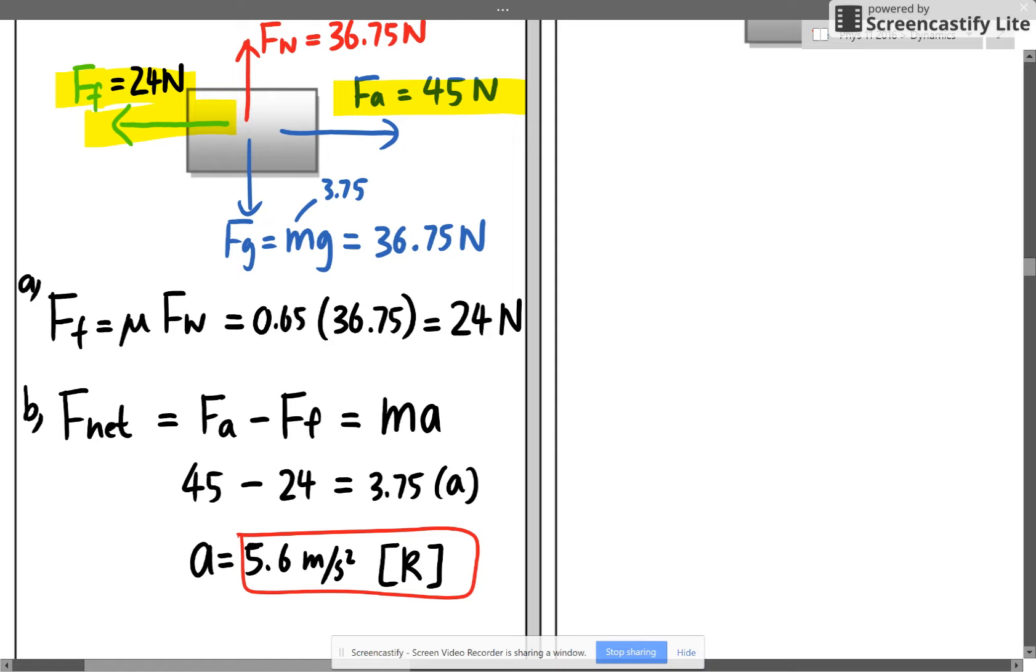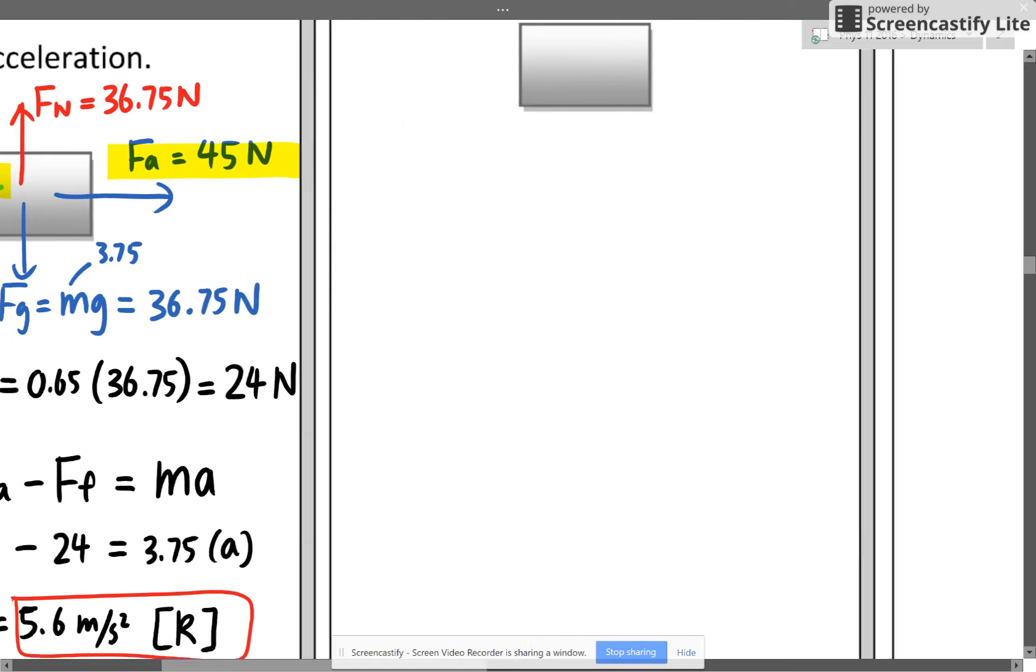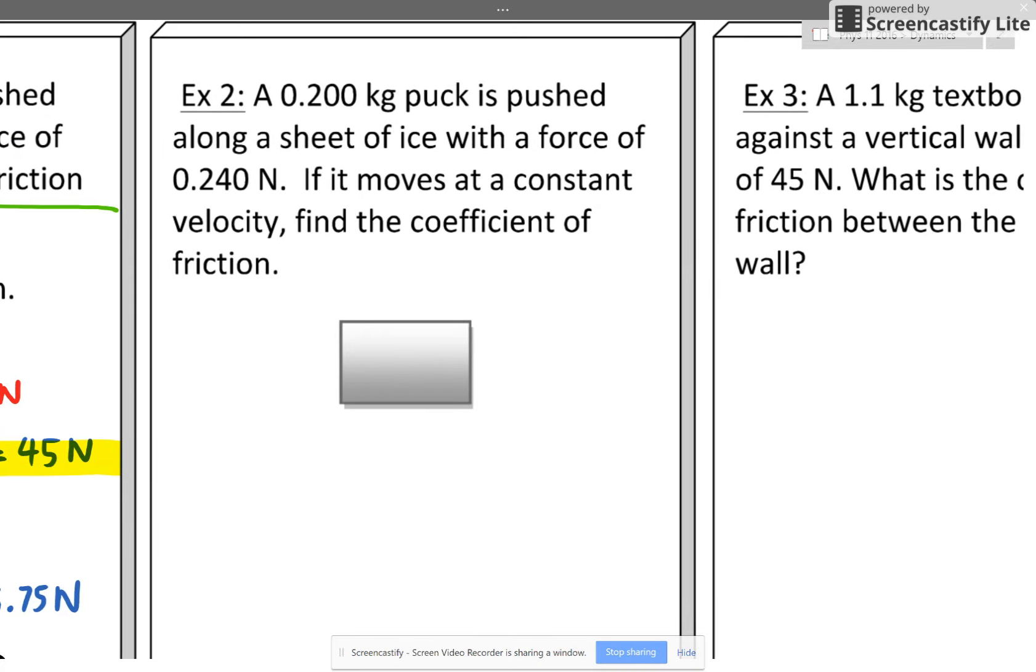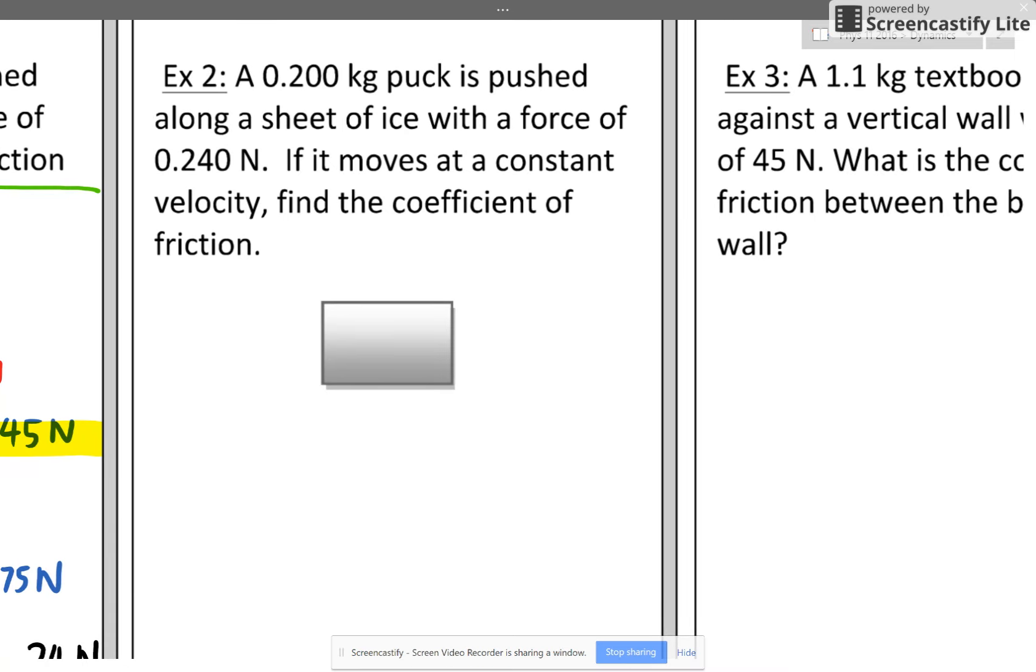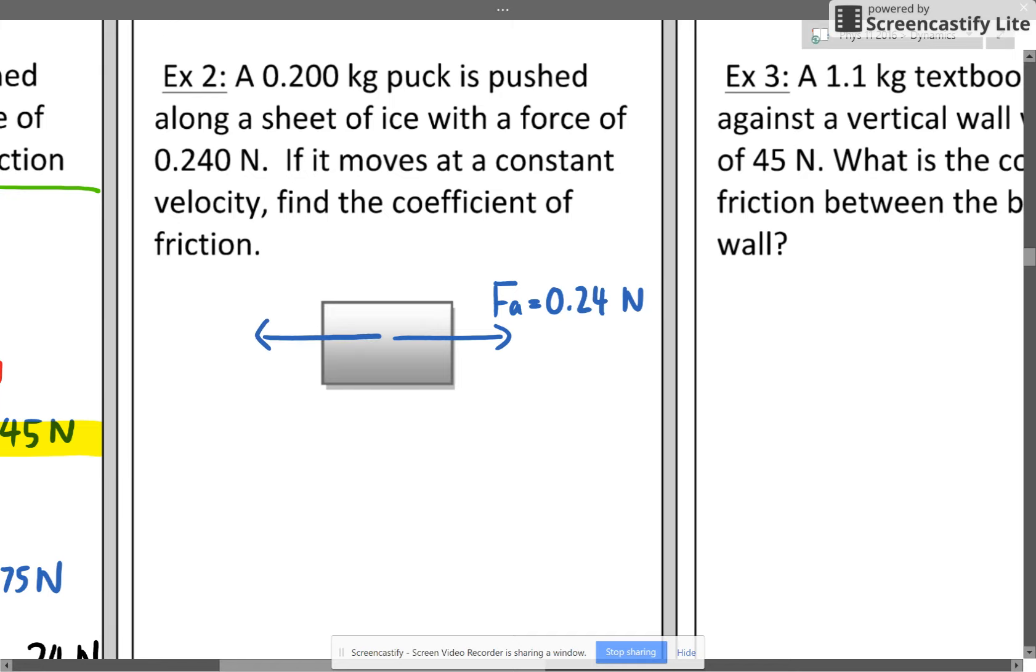Example 2: A 0.2 kilogram puck is being pushed along a sheet of ice with a force of 0.24 newton. So the applied force is 0.24 newton. If it moves at a constant velocity - oh, constant velocity, okay, that's telling me something. Constant velocity is telling me that in this battle no one wins, because if someone wins I should not have constant velocity, I should have acceleration.